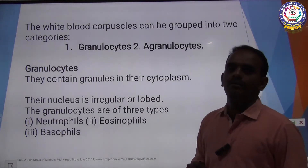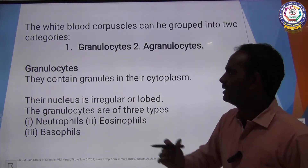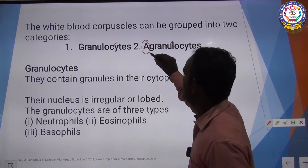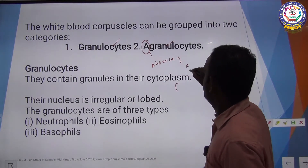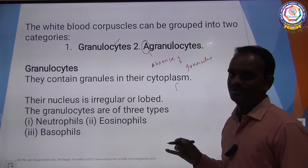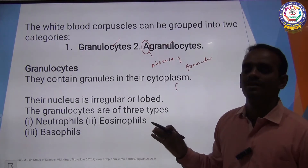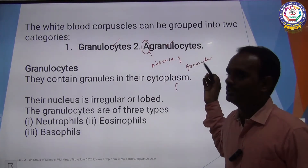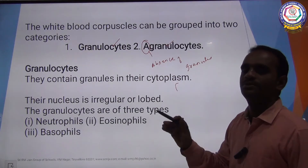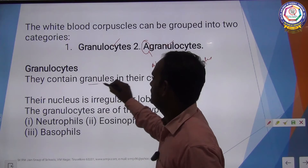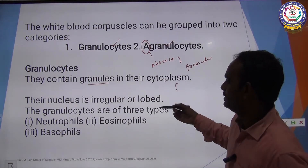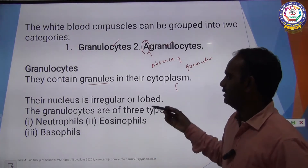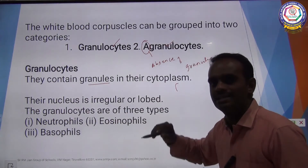White blood corpuscles are broadly classified into two types: granulocytes and agranulocytes. Granulocytes contain granules in their cytoplasm and have irregularly shaped nuclei. Granulocytes are further classified into three types: neutrophil, eosinophil, and basophil.